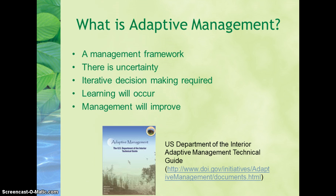Our focus here is on adaptive management. Adaptive management can be defined many ways. The critical aspect of adaptive management is learning — that is, learning through management, and adjusting management actions based on what is learned, with a focus on reducing uncertainty about the influence of management actions on resources, and improving management as a result of improved understanding.